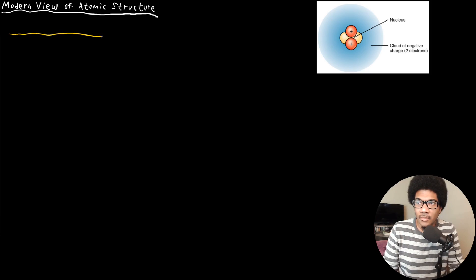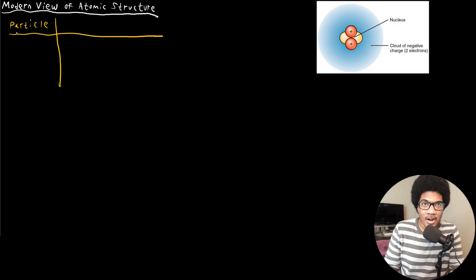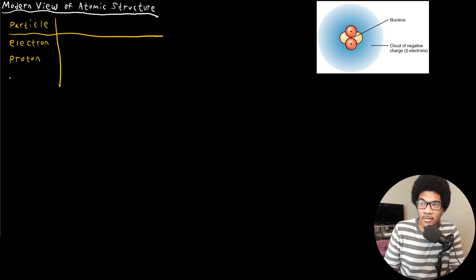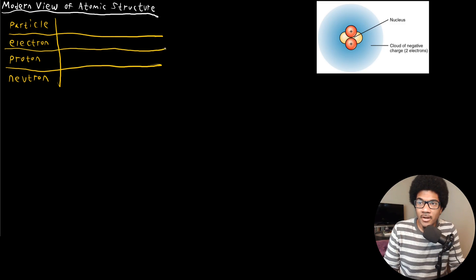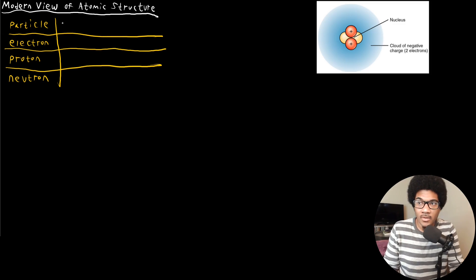I'm going to make a little chart. The three subatomic particles that our understanding of atomic structure primarily centers around are the electron, the proton, and the neutron. Each of these subatomic particles composes the atom. The electrons are the negatively charged particles that exist in a cloud around the nucleus. The protons are the positively charged particles in the nucleus, and the neutrons are neutrally charged particles in the nucleus.